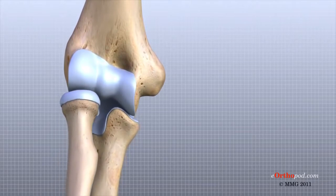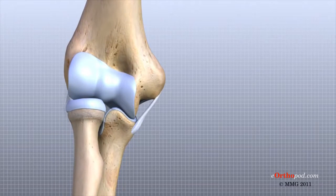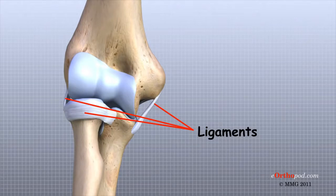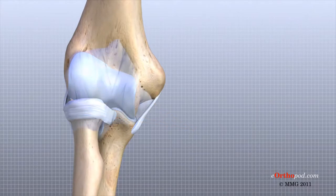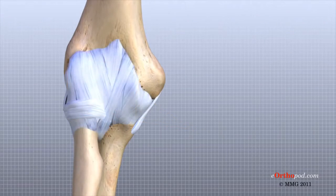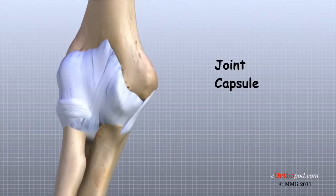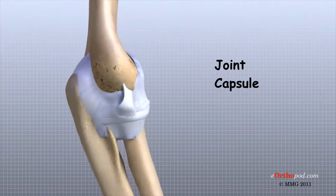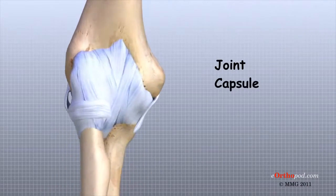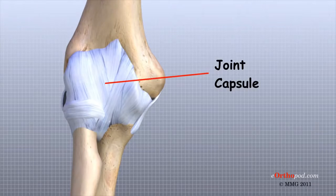There are several important ligaments in the elbow. Ligaments are soft tissue structures that connect bones to bones. The ligaments around the joint are connected with a thin layer of connective tissue and form a structure called the joint capsule. The joint capsule is a watertight sac that surrounds a joint and contains lubricating fluid called synovial fluid.